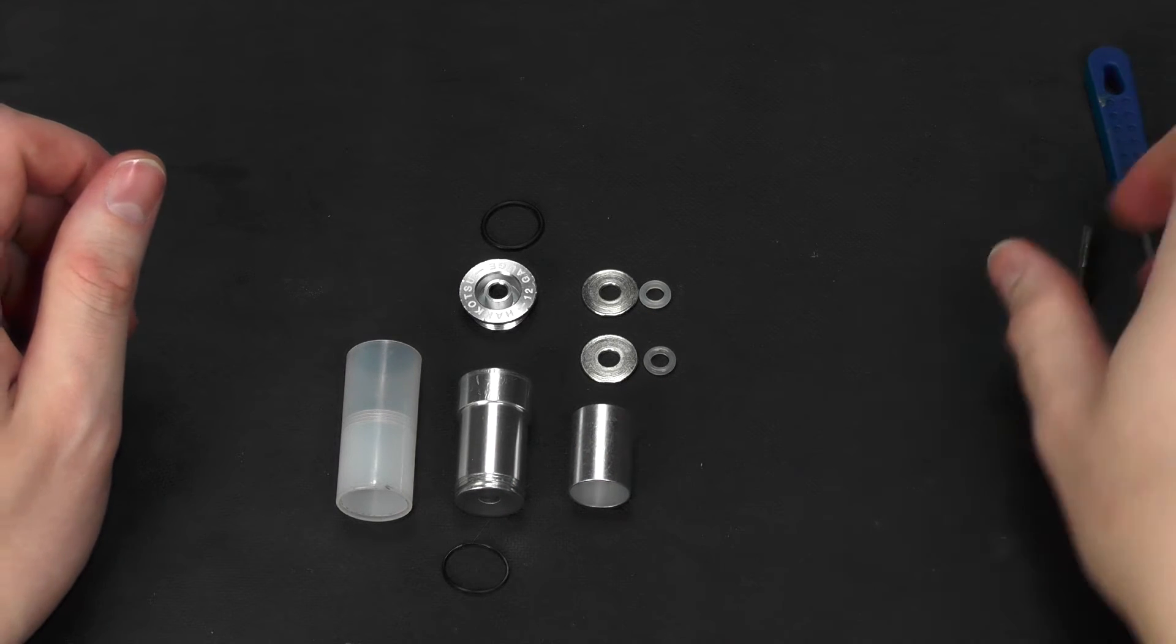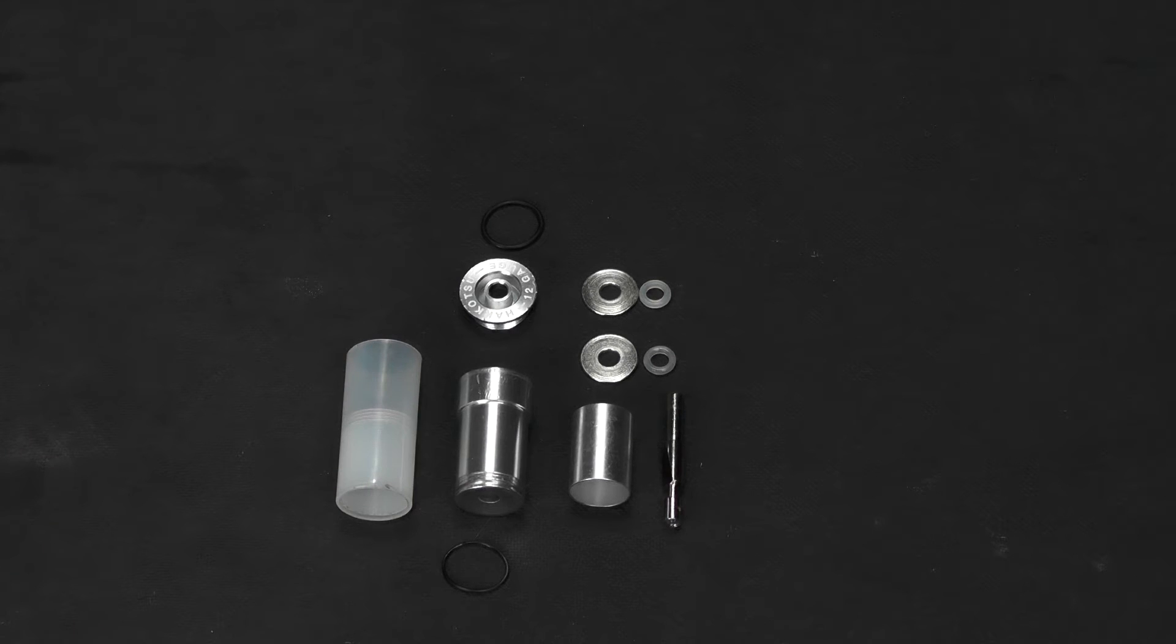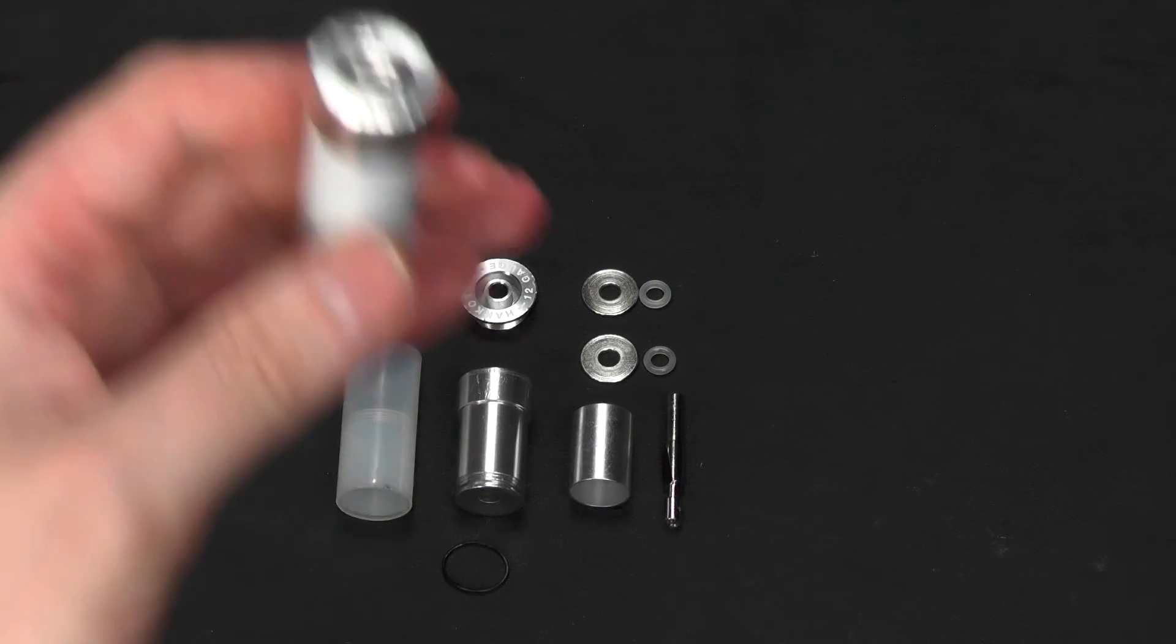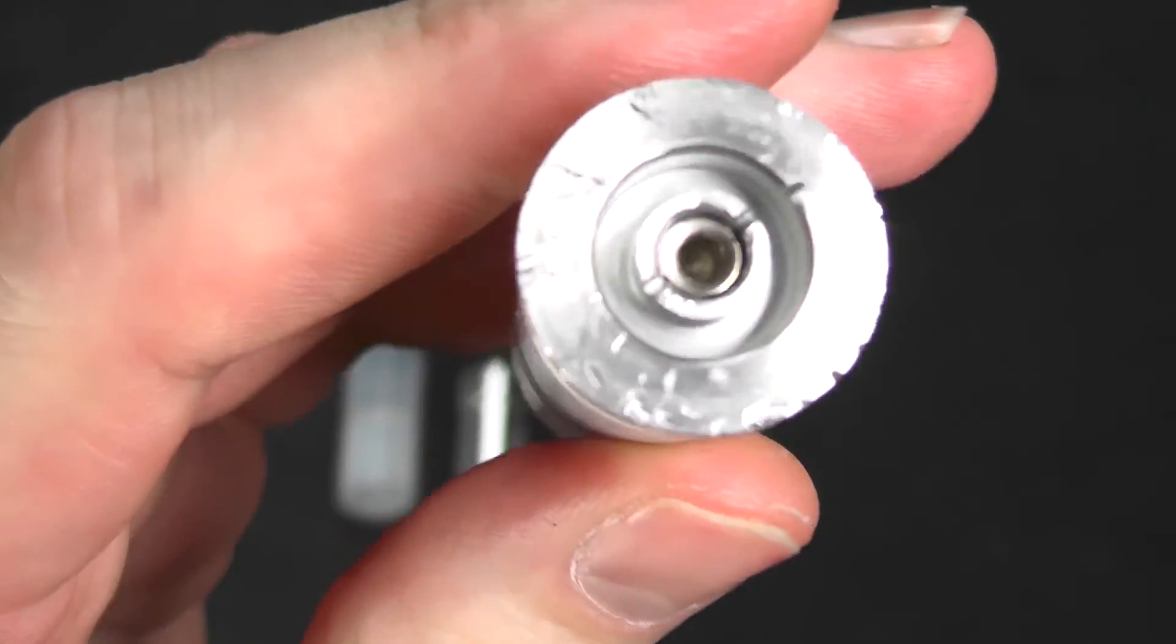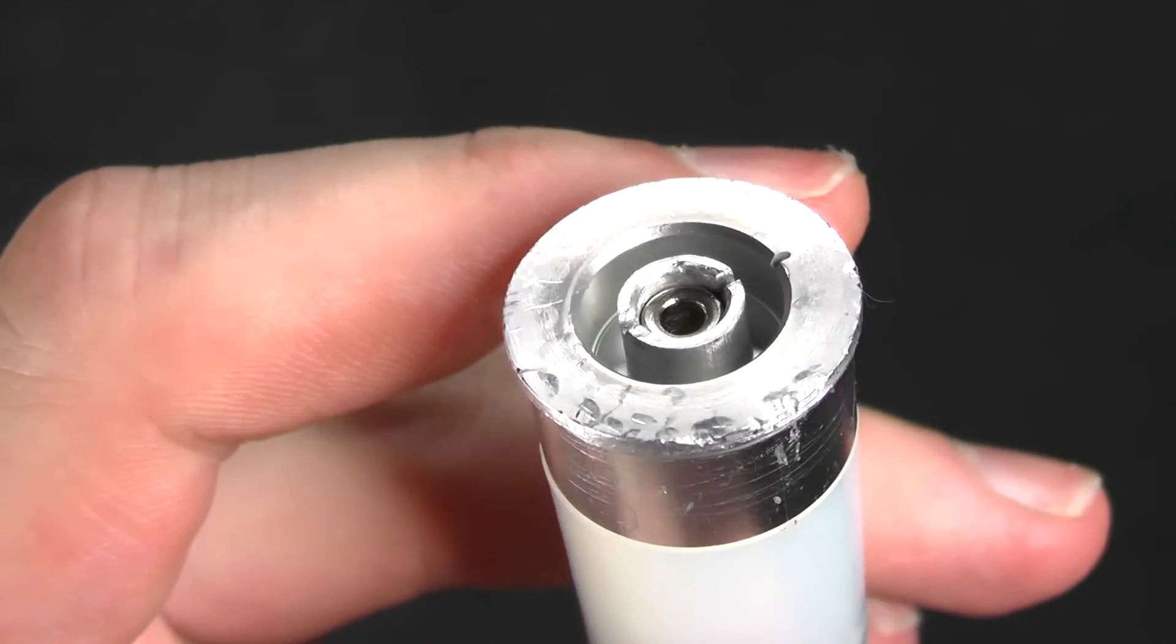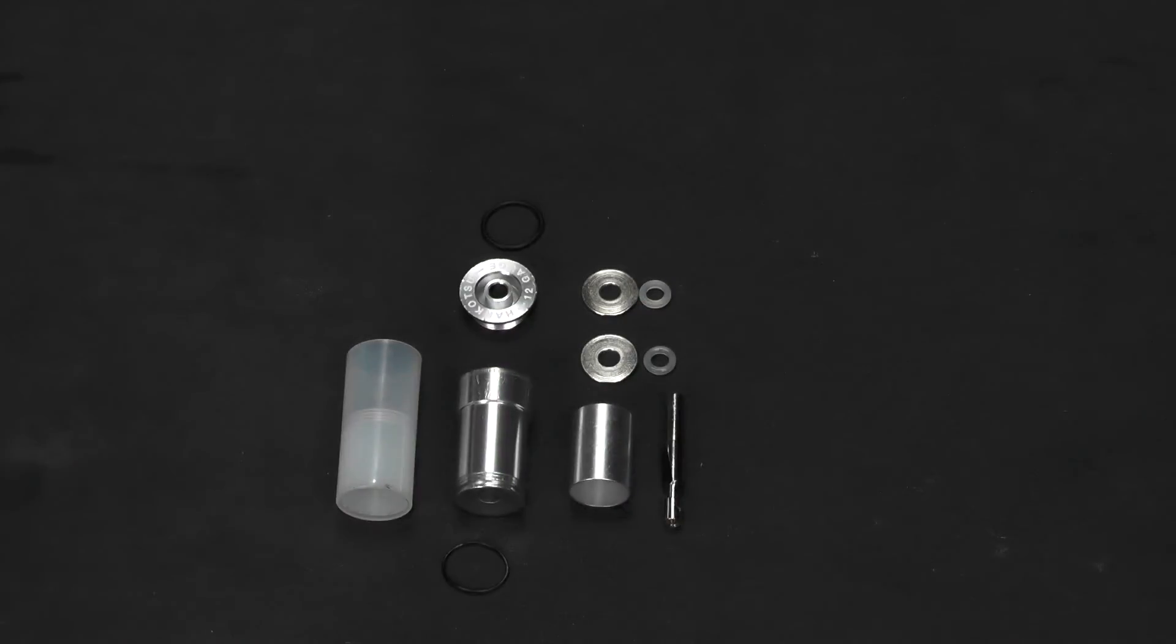So that is how you disassemble the APS CAM 870 shell the difficult way. Now please go look in the description if you want to do this mod to your shells. I would highly recommend it if you find that you're taking them apart a lot. It definitely helps. So that's it for this video, and I'll see you guys in the next one.